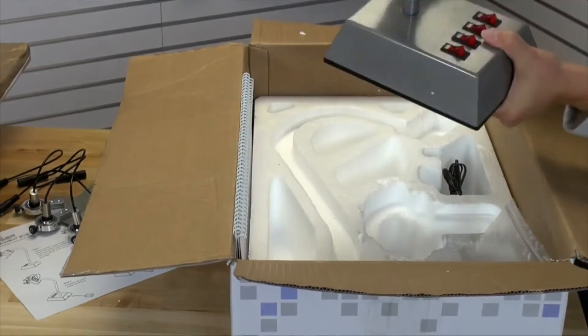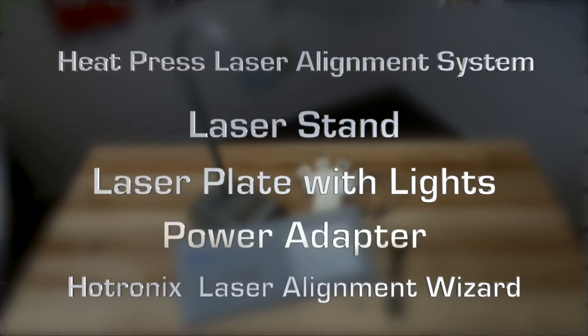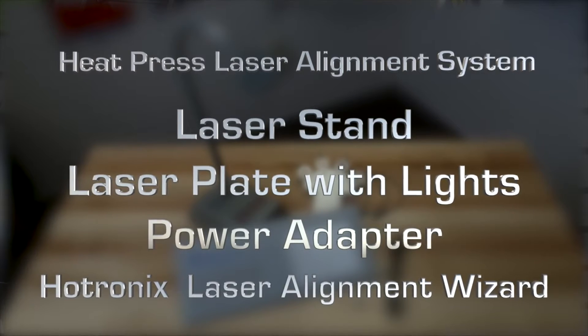Unpack the heat press laser alignment system and instruction sheet. The system includes the laser stand, laser plate with lights, the power adapter, screws, and the laser alignment wizard.